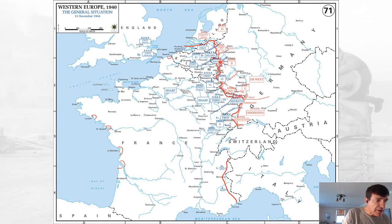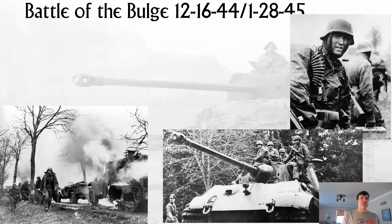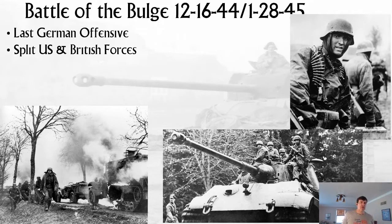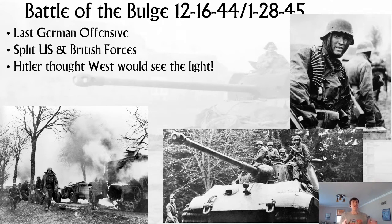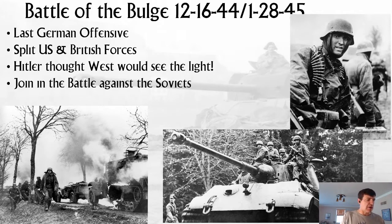The German plan was a massive attack through the Ardennes and a sweep to the sea — actually hoping to get to the port city of Antwerp and cut the British off again. They were hoping that in the winter, Allied air superiority could not be used. They thought if they could split U.S. and British forces, the British and Americans would realize the folly of their ways, see that the real enemies were the Soviets, and join the battle against the Soviets. That should give you an idea how delusional Hitler was.